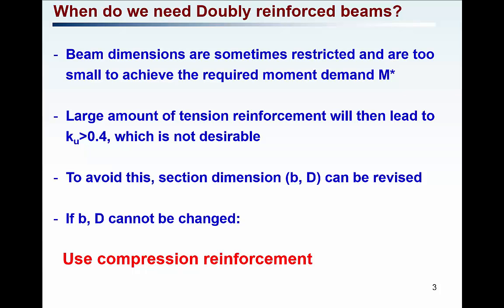When you calculate KU, the KU term will come greater than 0.4. If KU is greater than 0.4, it means your beam is brittle — it will fail in a brittle failure mode, which is not a desirable failure mode. One way to avoid this is to change the dimensions of the beam. However, if B and D are restricted, then you need to go for compression reinforcement so that you can bring the KU value below 0.4 and make the beam ductile.